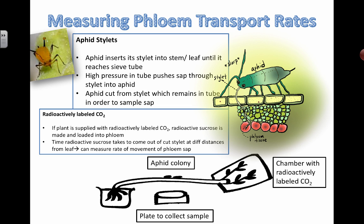Scientists want to figure out how quickly a plant does photosynthesis and what the rate of phloem transport is. By using the aphid stylet system, scientists have been able to calculate phloem transport rates — seeing how long it takes for sap from a given area to travel a particular distance. Pretty clever stuff.